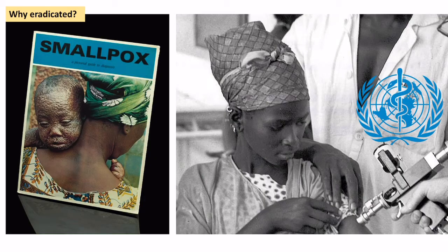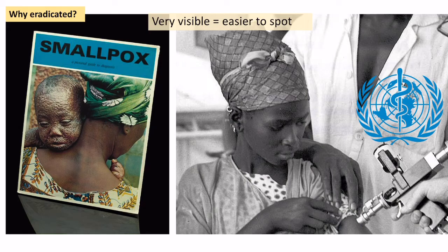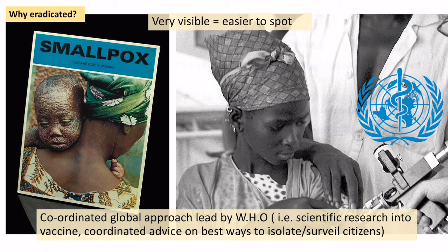Part of the reasons for this success is a physical factor: smallpox is very visible and easy to spot. If someone has got it, you can clearly see the lesions on their body. WHO also led a very top-down approach — they coordinated a global response, led scientific research into the vaccine to get it out quicker, and gave guidance on how to isolate communities and surveil citizens for the disease, which meant eradication happened more quickly.